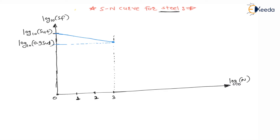As number of revolutions continues to increase — 10⁴, 10⁵, 10⁶ — the fatigue life goes on decreasing, and there is a drastic change in the curve. At 10⁶ revolutions, that is 1 million revolutions, the fatigue strength is called the endurance strength. We have already seen this in a previous lecture.